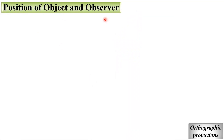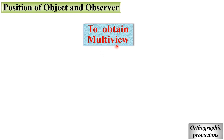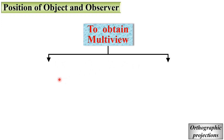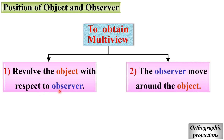Now see the position of the object and observer. To obtain the multiple views — top view, front view, bottom view, right hand side view, left hand side view, etc. — there are basically two different methods. First is to revolve the object with respect to the observer. Second, the observer moves around the object. In the first case the observer has a fixed position; in the second case the object has a fixed position.